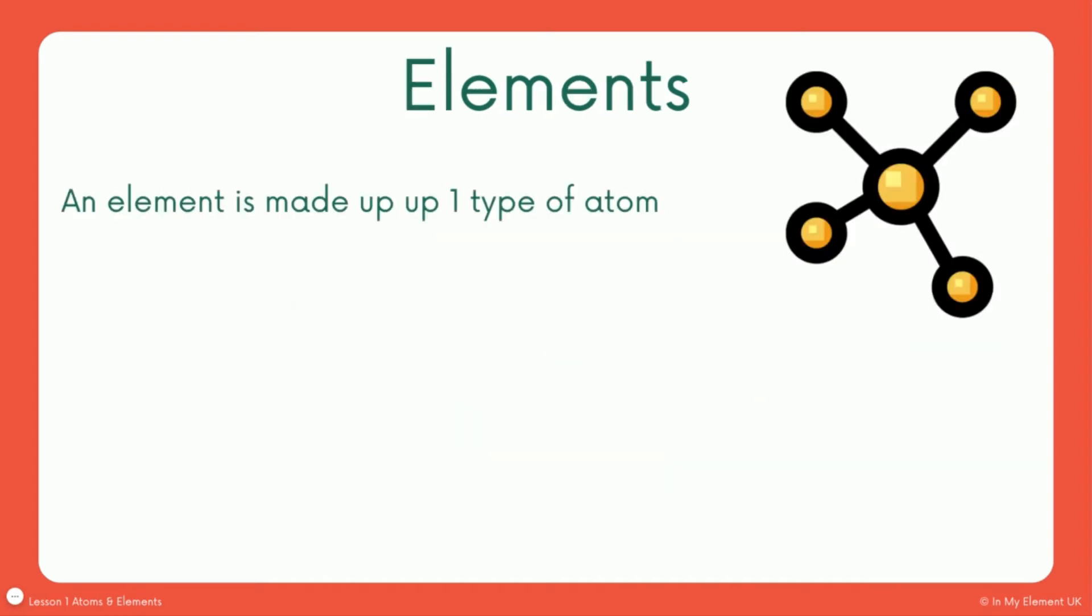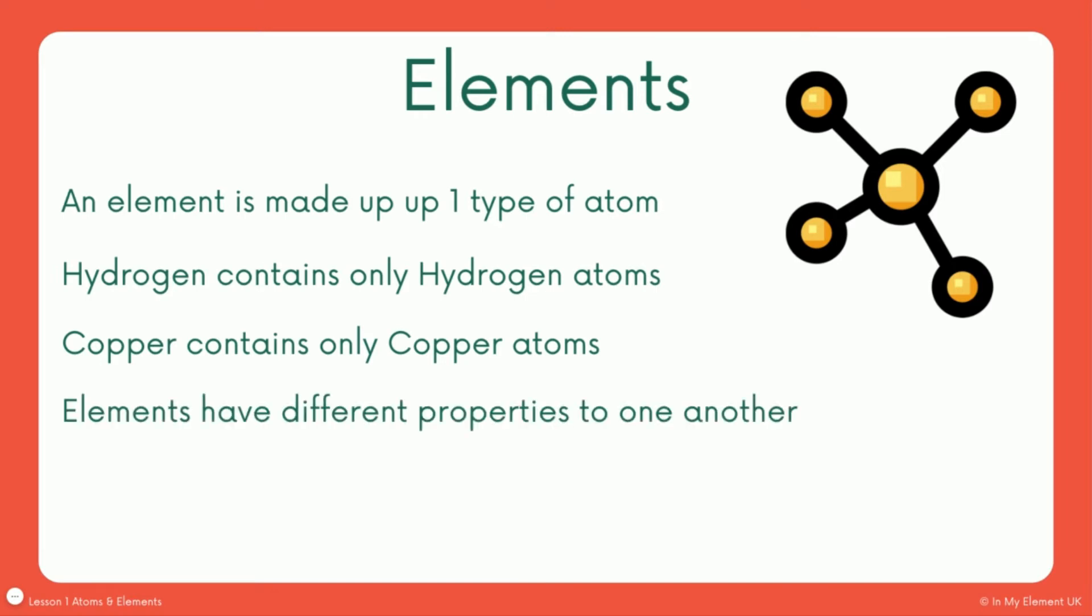So that leads us nicely into elements. The element's made up of one type of atom which we've just talked about briefly with the example of gold. We'll use another example here, hydrogen. Hydrogen is a gas and it contains only hydrogen atoms. Copper, we know copper in terms of copper wire, copper pipes. Copper contains only copper atoms.